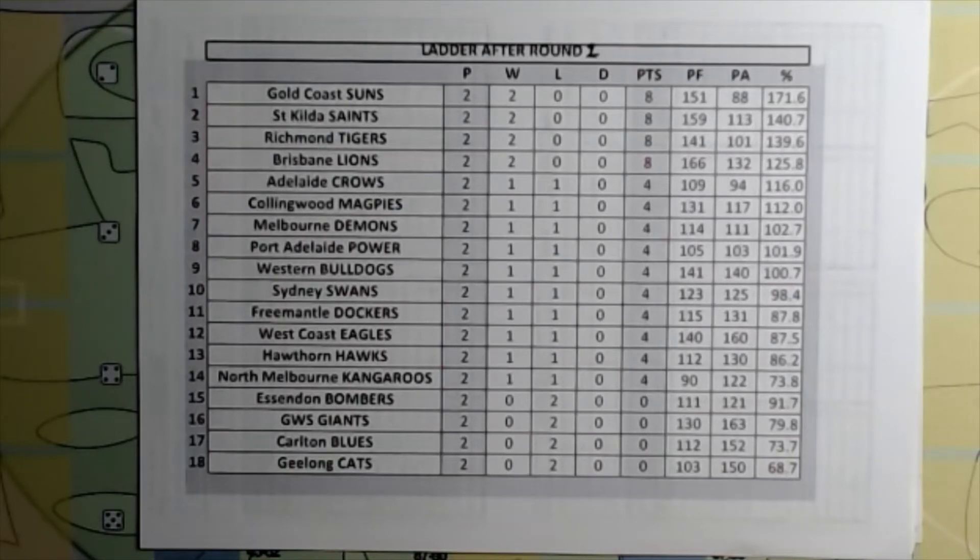Hawthorn and North Melbourne on one win and one defeat. And then the Essendon Bombers, GWS, Carlton, and Geelong all without a win.